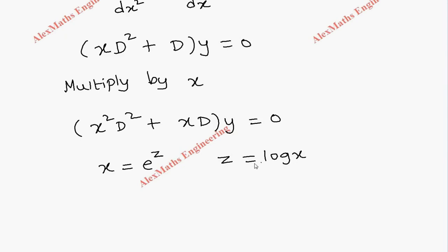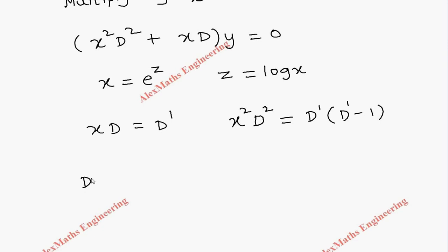Now x d is replaced as d dash and x square d square is replaced as d dash into d dash minus 1. Now by replacing this we get d dash into d dash minus 1 plus d dash into y equal to 0.